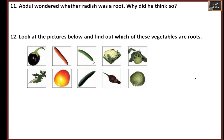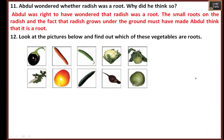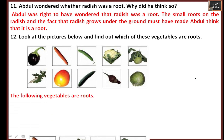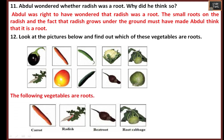Abdul wondered whether radish was a root. He was right — the small roots on the radish and the fact that radish grows under the ground must have made Abdul think it is a root. The following vegetables are roots: carrot, radish, beetroot, and cabbage.